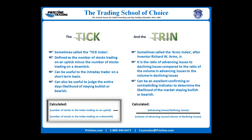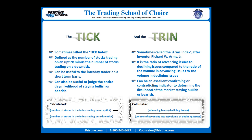The Trin is sometimes called the Arms Index, named after the inventor Richard W. Arms, Jr. In short, it is the advancing stocks divided by declining stocks, compared to the volume of advancing issues compared to the volume of declining issues. This is an excellent confirming or contradicting indicator to gauge the market's level of being bullish or bearish. Both the absolute numbers and the trends must be looked at when using the Trin to evaluate the market.